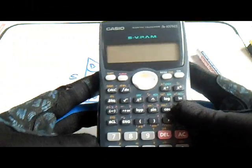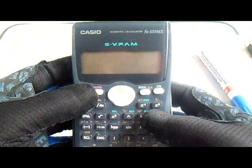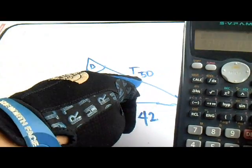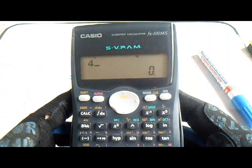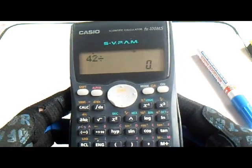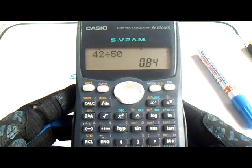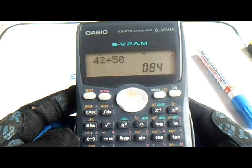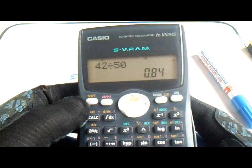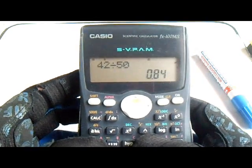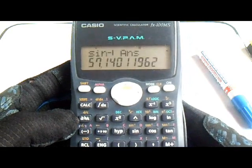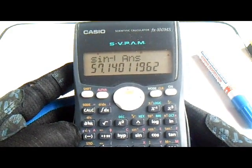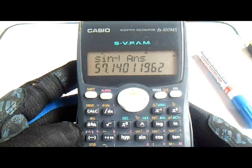This is the formula and how to use it. Just divide 42 by 50 — so 42 divided by 50. Our answer is 0.84, and then for the inverse sine of 0.84, just press Shift and then Sin equals. So our answer for angle D is 57 degrees.